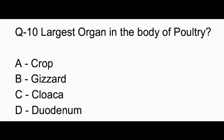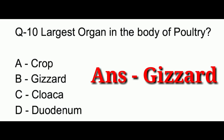Question number 10. The largest organ in the body of poultry is: option A, crop; option B, gizzard; option C, cloaca; option D, duodenum. The answer to this question is option B, which is gizzard.